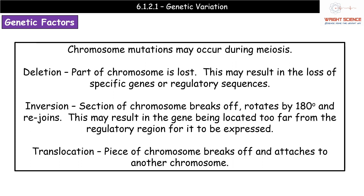Option two is inversion. A bit of the chromosome breaks off, rotates by 180 degrees, and then rejoins the same structure. We're not losing any genes — they are still present — but we've changed their positions. A gene moved to the opposite end of a section could be far too far from its regulatory region for normal expression to happen, so inversion can interfere with the expression of certain genes by changing the location of the gene relative to its regulatory region.